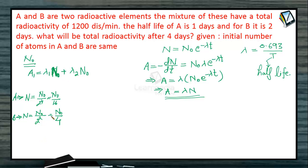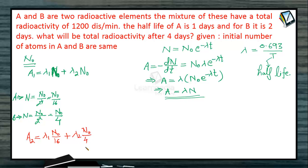According to the number of atoms remaining, the activity after 4 days, A2, is what we need to find. A2 = λ₁ × (N₀/16) + λ₂ × (N₀/4), where N₀/16 is the instantaneous number of atoms for element A and N₀/4 is that for element B. This is the activity after 4 days.